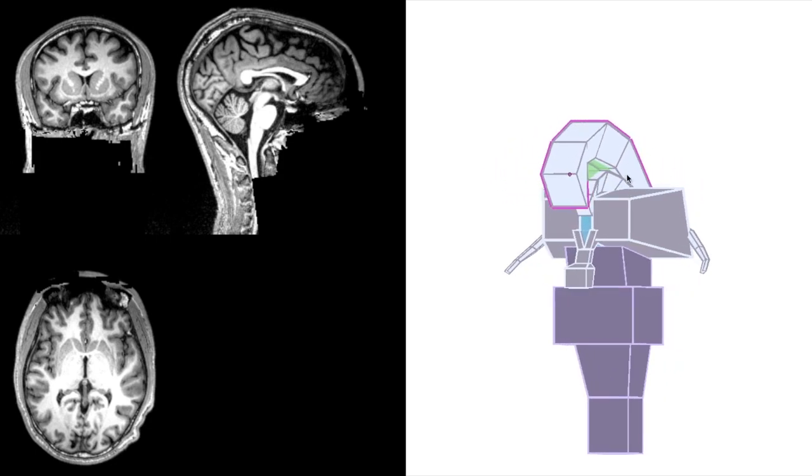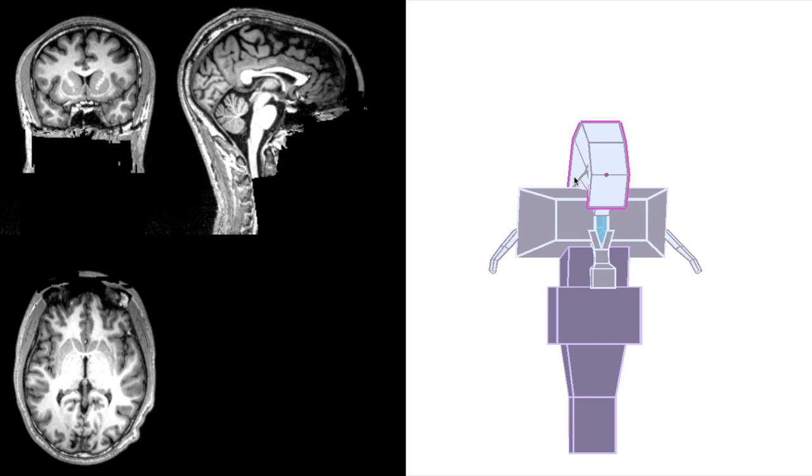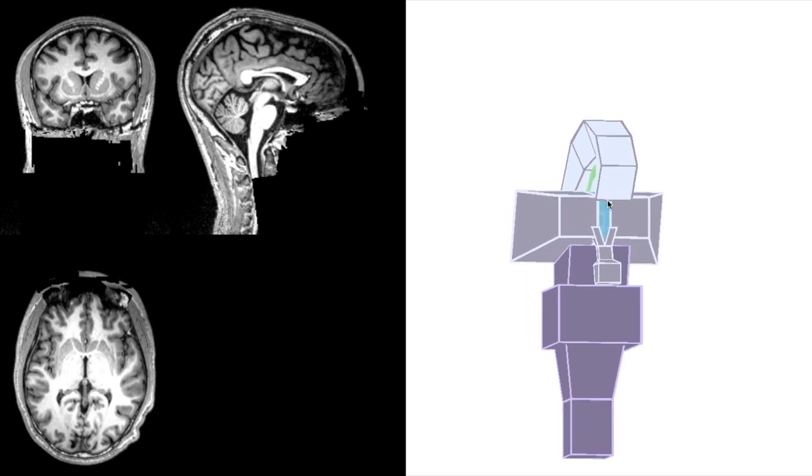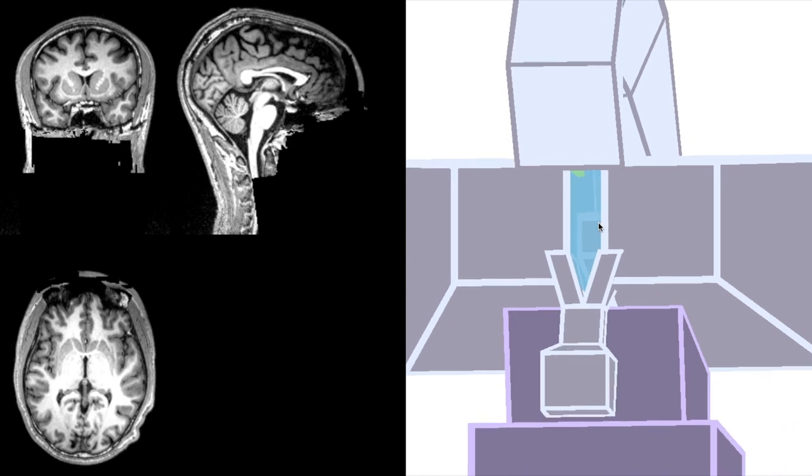And if we remove the fornix now, we can see the third ventricle in the space that surrounds the interthalamic adhesion.